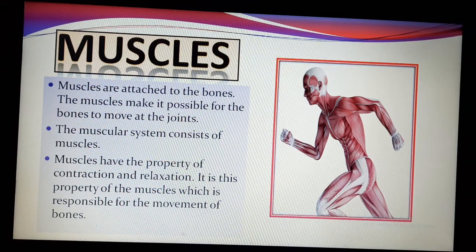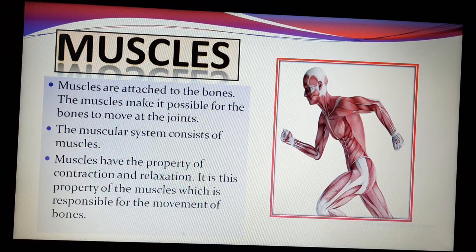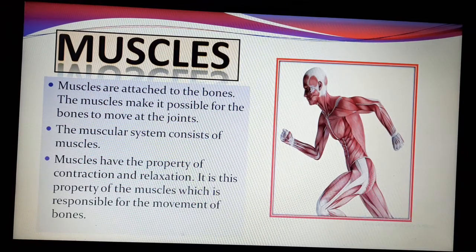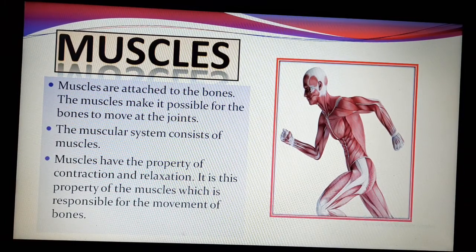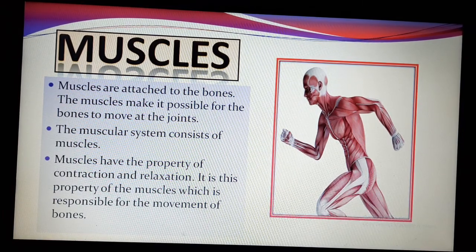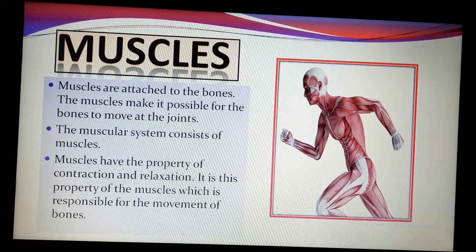Even if we have movable joints in our body, without muscles we cannot move those joints either. These muscles form the muscular system of our body. Muscles have the property of contraction and relaxation — meaning they can sometimes become smaller in size, and sometimes they can relax and go back to their normal position or normal shape.